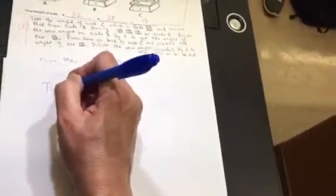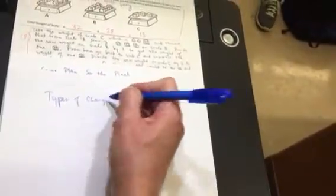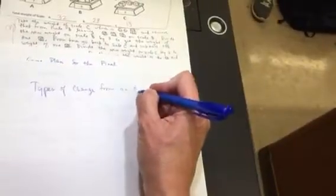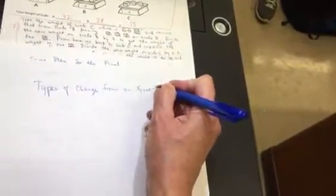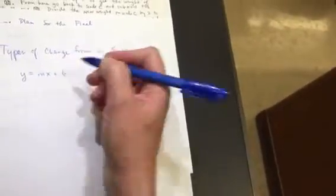Types of change from an equation. So if we have something like this, y equals mx plus b. The type of change is a constant change.